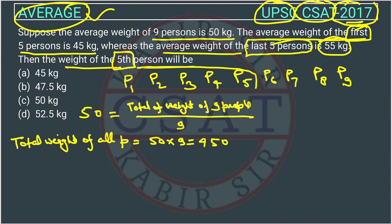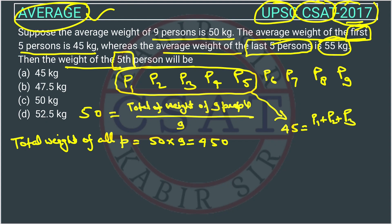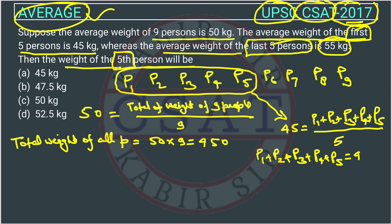Now they have also given the average weight of the first five persons. The average weight of these five persons is 45 kg. So this will be equal to (p1 + p2 + p3 + p4 + p5) divided by 5 equals 45. Therefore, p1 + p2 + p3 + p4 + p5 will be equal to 45 into 5, which is equal to 225.